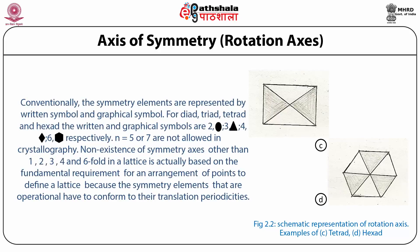Conventionally the symmetry elements are represented by written symbols and graphical symbols. For diad, triad, tetrad and hexad, the written and graphical symbols are: 2 shown as an ellipse, 3 shown as a triangle, 4 shown as a diamond, and 6 shown as a hexagon respectively. n equals 5 or 7 are not allowed in crystallography. Non-existence of symmetry axes other than 1, 2, 3, 4 and 6-fold in a lattice is based on the fundamental requirement for an arrangement of points to define a lattice, because the symmetry elements that are operational have to conform to their translational periodicities.